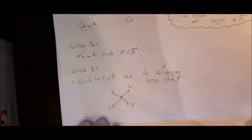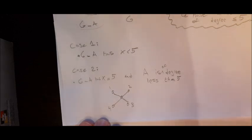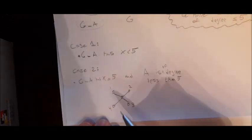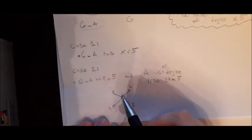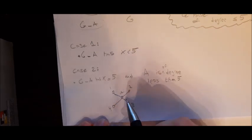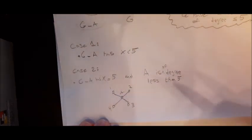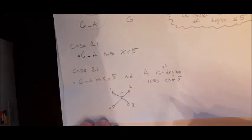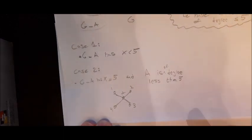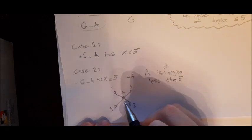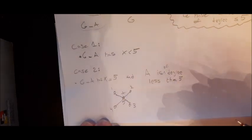Case two: G minus A has chromatic number equal to five, but A is of degree less than five — four or fewer neighbors. Since A connects to fewer than five vertices, those neighbors use at most four distinct colors. One color remains unused among A's neighbors, so we can simply color A with that remaining color.